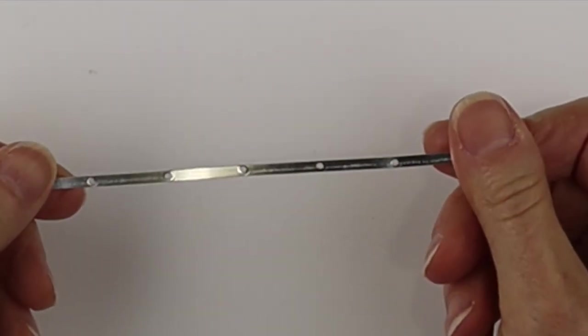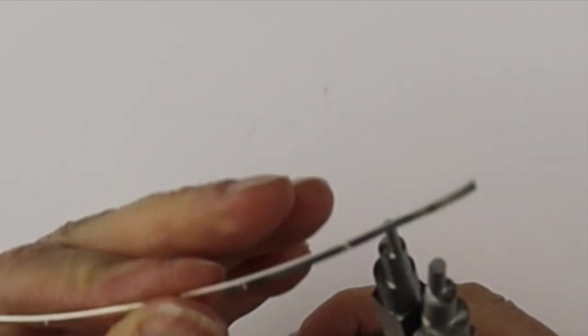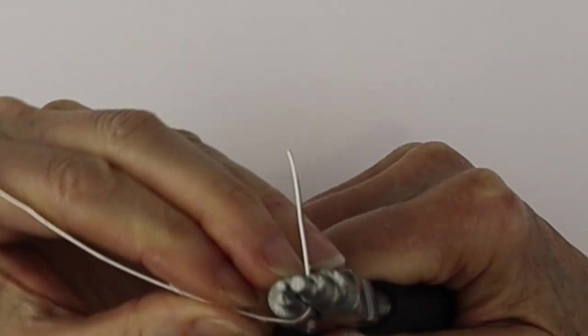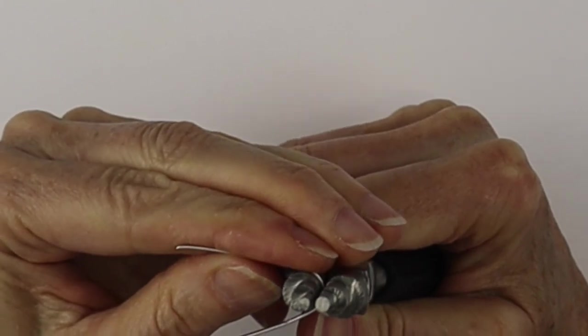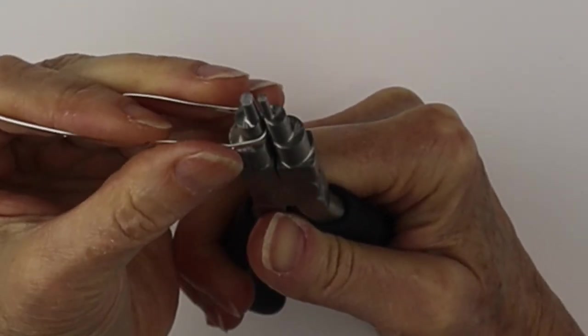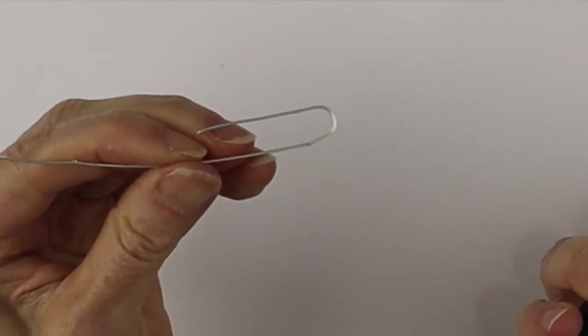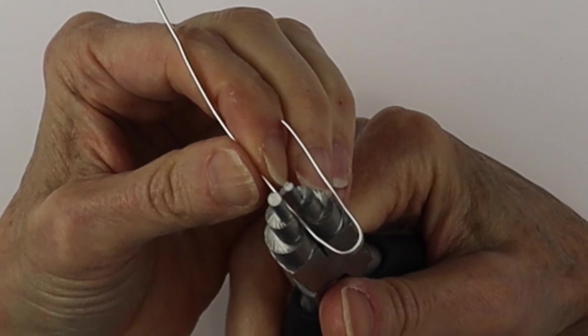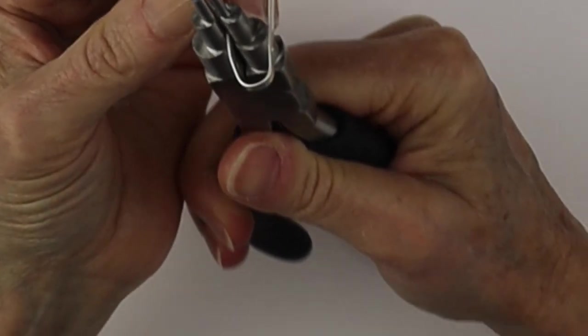Now we're going to take our looping pliers and curve the wire in between each set of holes. We're going to curve it around and we want the holes to line up as we're doing this. Just hold it with the looping pliers, these are the six step looping pliers from Bead Along.